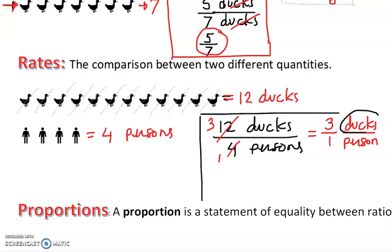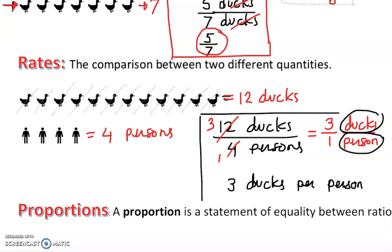The units are different — this one is ducks and this one is per person — so we cannot cancel the units. They stay because in a rate you have different units. So our final answer, after reducing, is three is to one, or three ducks per person. That could be the best output for us with the rate.